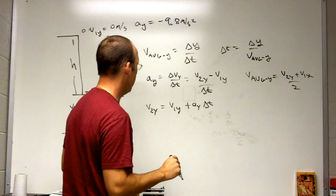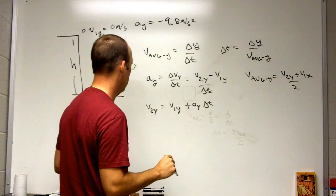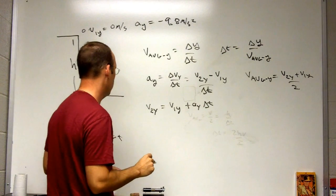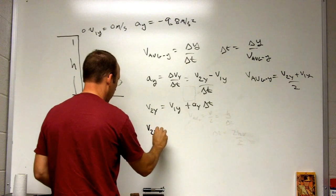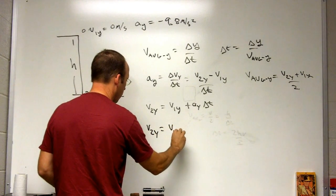So I can put that in for delta t. Yeah, I'm trying to find the final velocity. So v2y equals v1y plus ay...